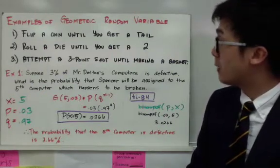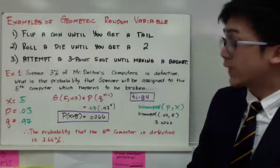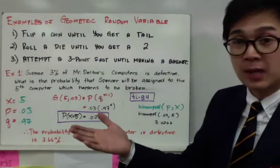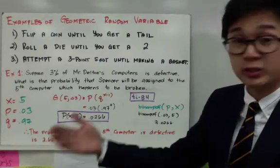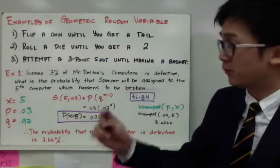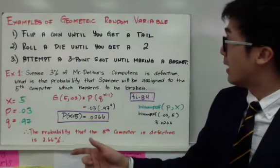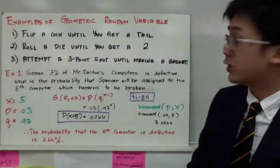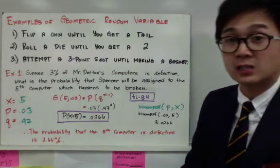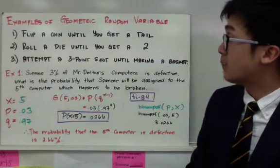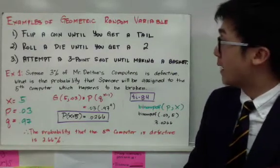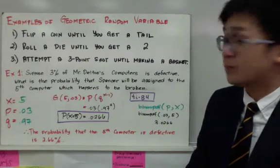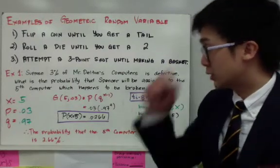Number 1, you just keep flipping a coin until you get a tail. Your tail could be on the first flip, tail right away, or the second person keeps flipping the coin and even after 100 flips, still hasn't gotten a tail. So it's a geometric experiment because there's no fixed number of trials. Same thing with number 2 and number 3. What we have is the probability of success and the other conditions for geometric distribution.